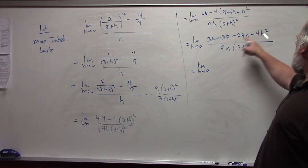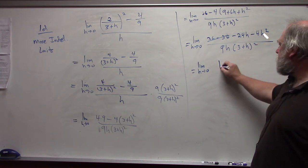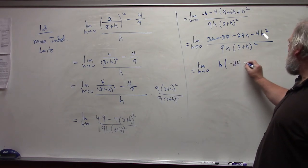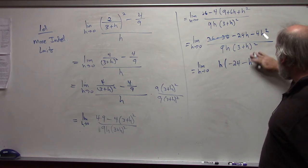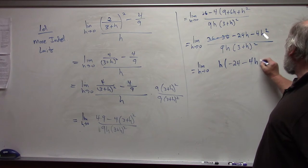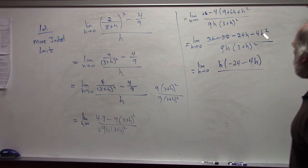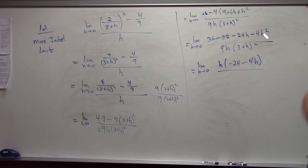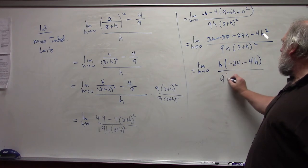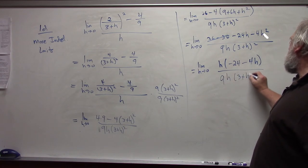And I can factor out an h, and I'm left with negative 24 minus h squared, minus 4h squared. I could have factored a 4 also, but that's not that important at the moment. So negative 24 minus 4h over 9h times 3 plus h quantity squared.